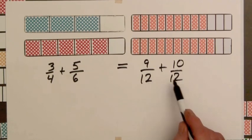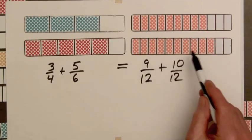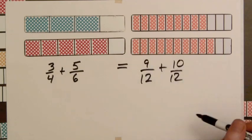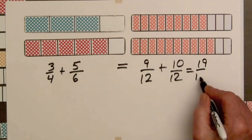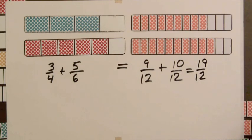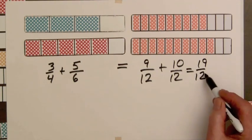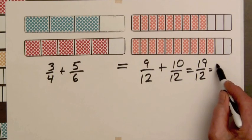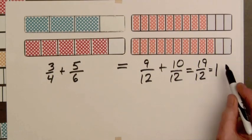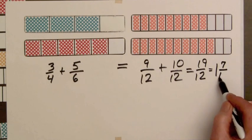And since the fractions have the same denominator, the bars have the same size parts, we can just add the total number of parts, we get 19/12. And since the whole bar has twelve parts, we know that we have nineteen parts, we've got one whole bar, and that leaves seven parts or 7/12.